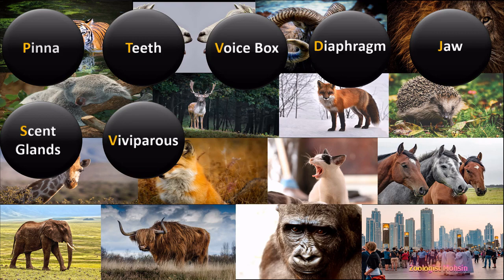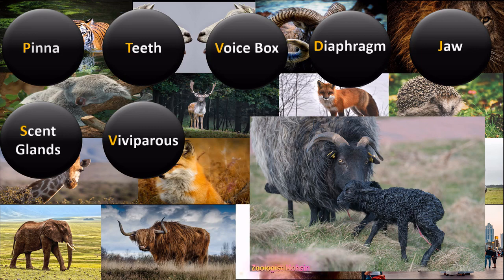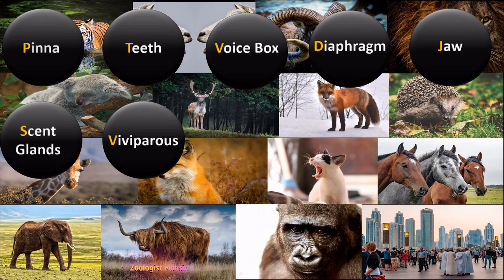The next feature is viviparity. Mammals are viviparous, meaning they develop their young ones inside their body, and when the young ones are fully developed, they are given birth. This characteristic is called viviparity. We have seen viviparity in some snakes as well, but that is different from mammals.